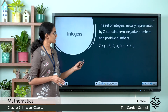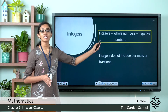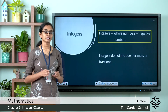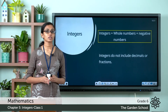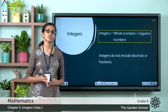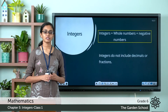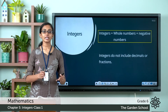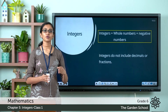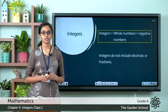So you can say integers equal the collection of whole numbers plus negative numbers. One important thing to keep in mind is that integers do not include decimals or fractions, and integers can be positive and negative. So we redefine the set of integers as the collection of positive integers, 0, and negative integers.